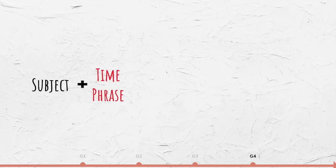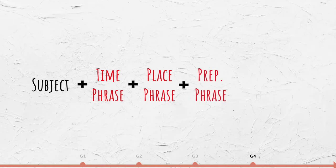When a sentence contains a time phrase, a place phrase, and a prepositional phrase, the most common word order is subject plus time phrase plus place phrase plus prepositional phrase plus verb phrase.